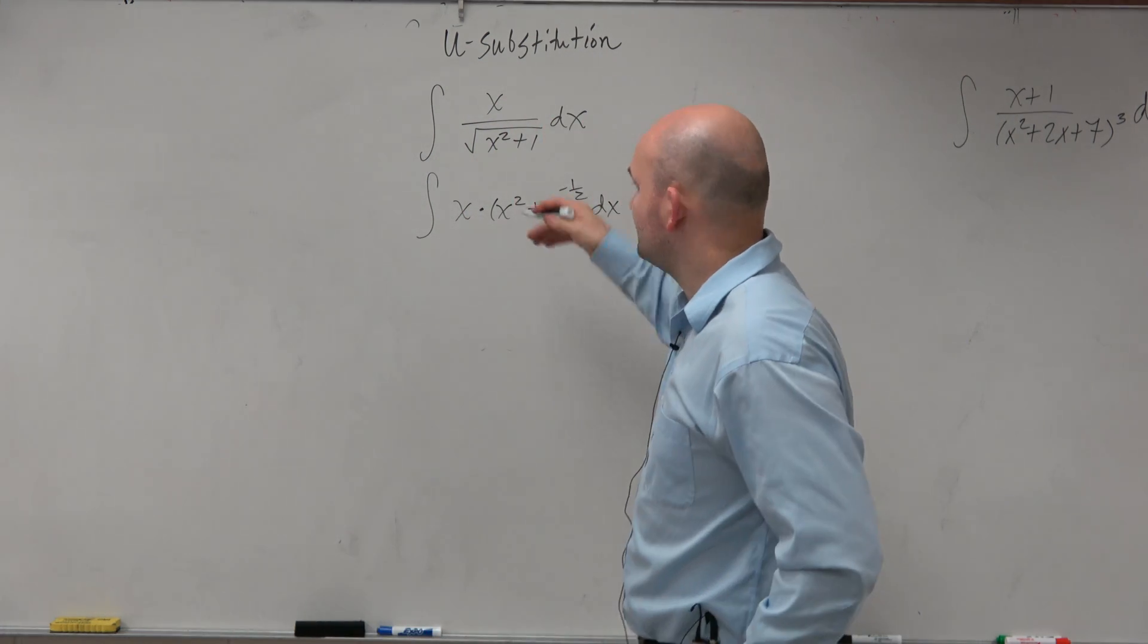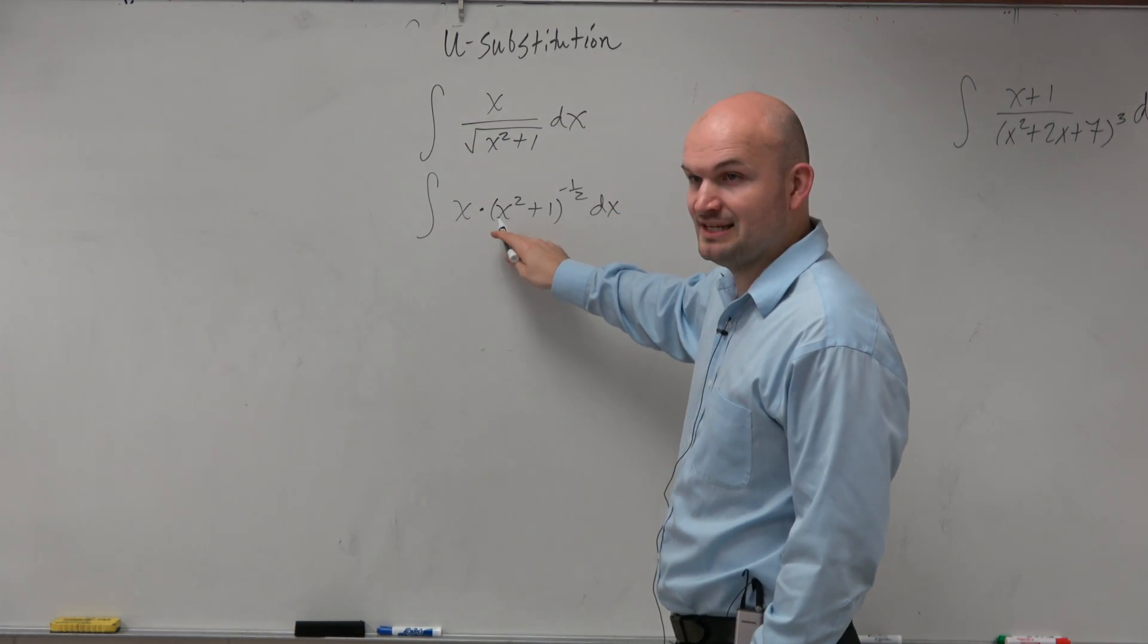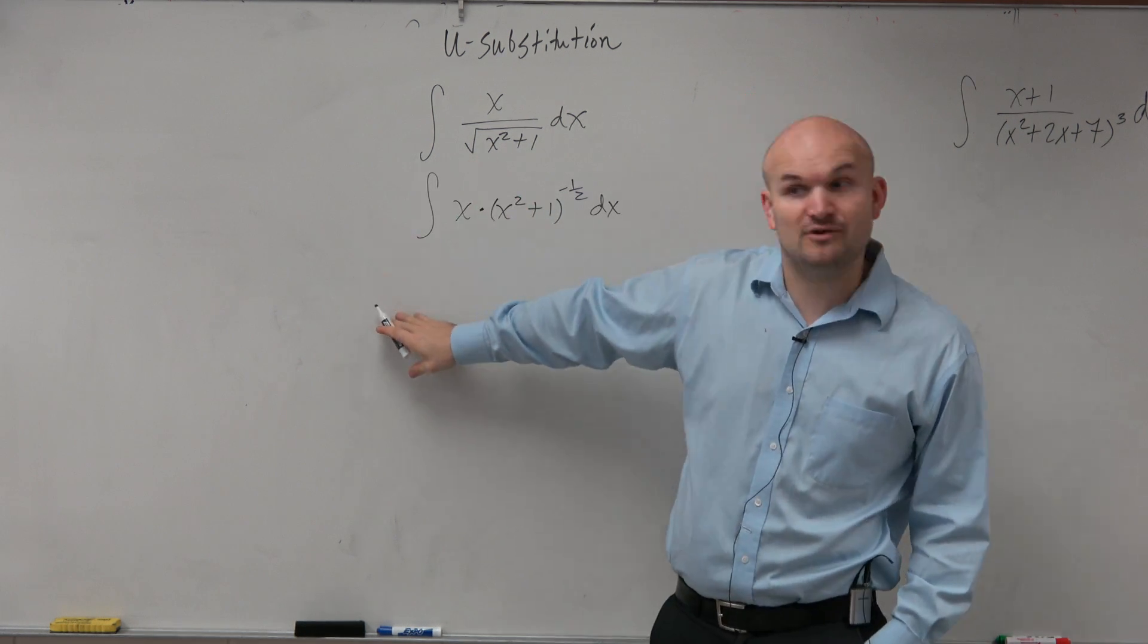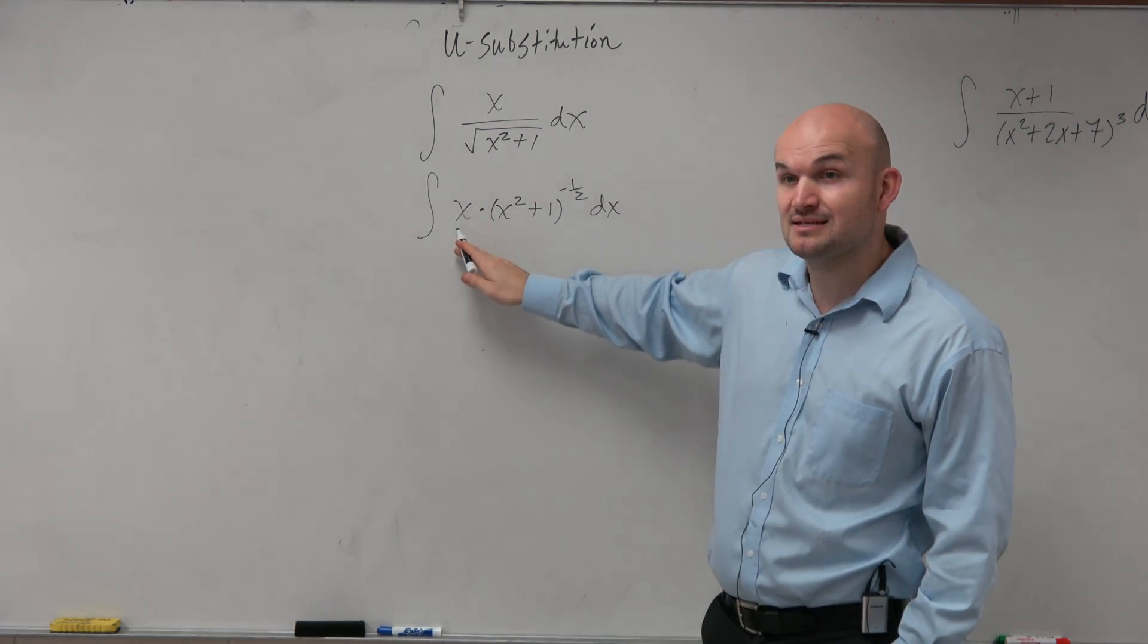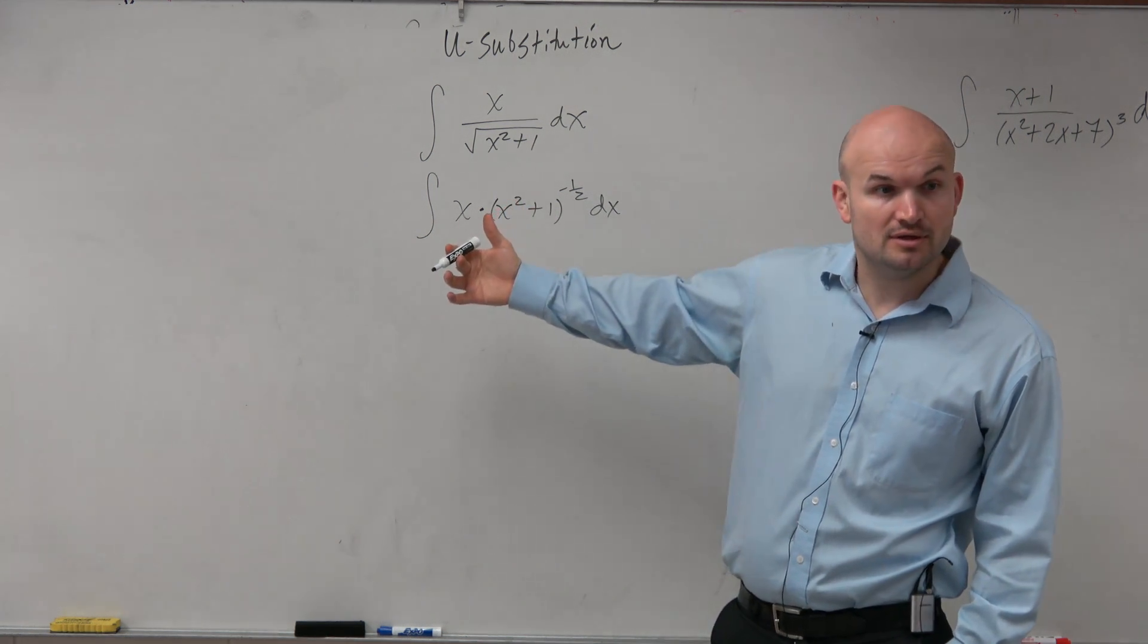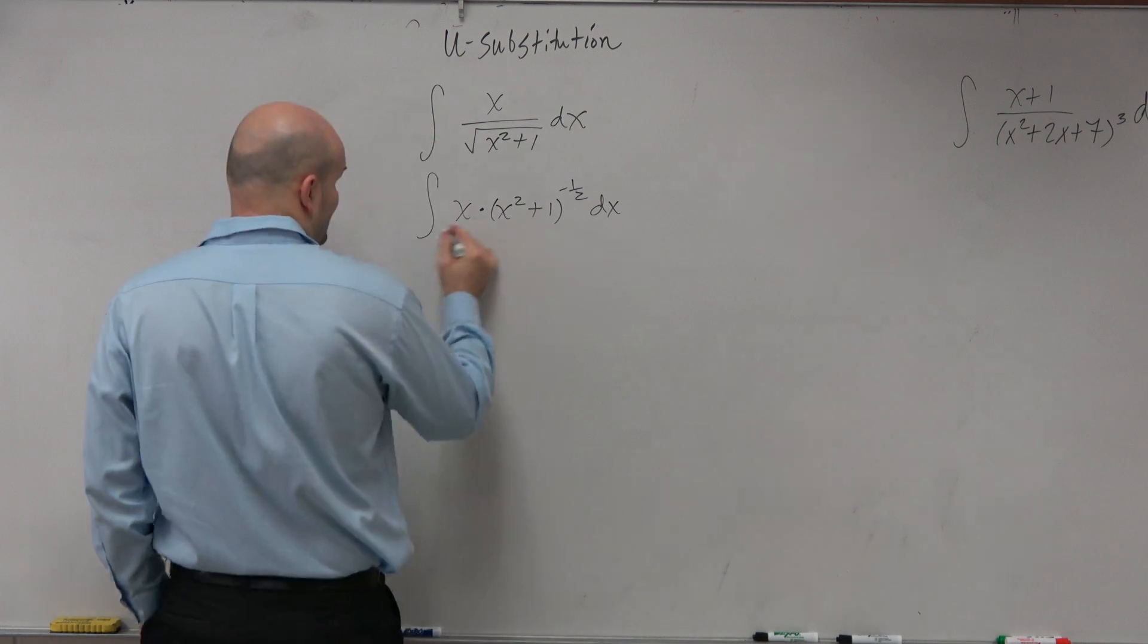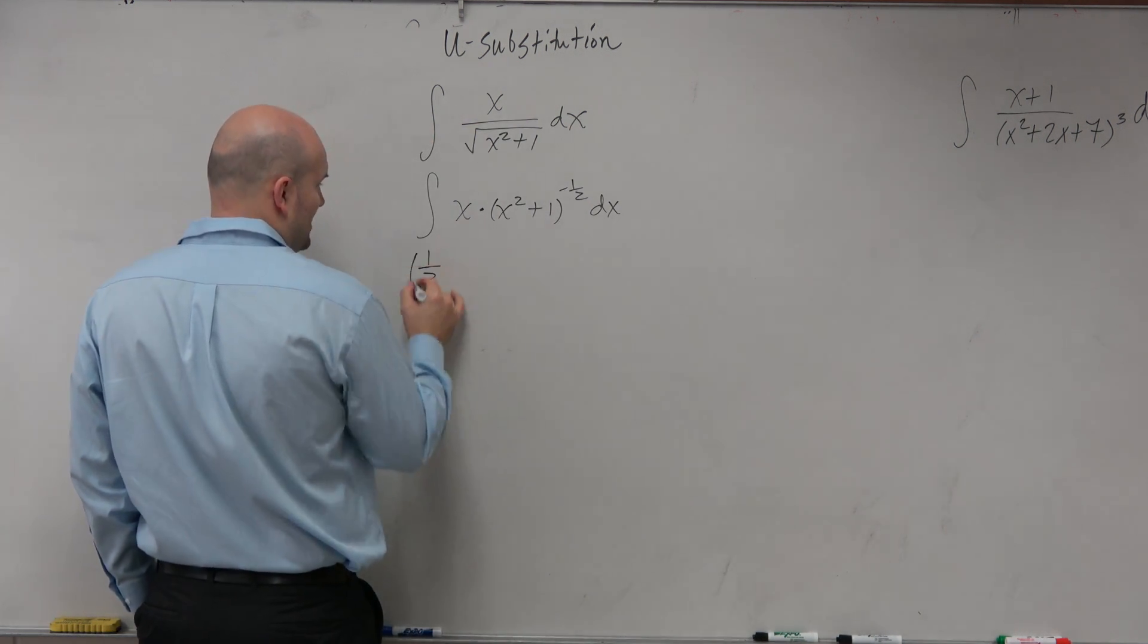And then I also think about, again this is my brain thinking, if I take the derivative of this inside, that's going to be 2x. I'm going to need something to counter that 2. I have the x, but I need to counter that 2. Everybody agree with me? Yes? So I know that I'm going to need to multiply that by 1 half.